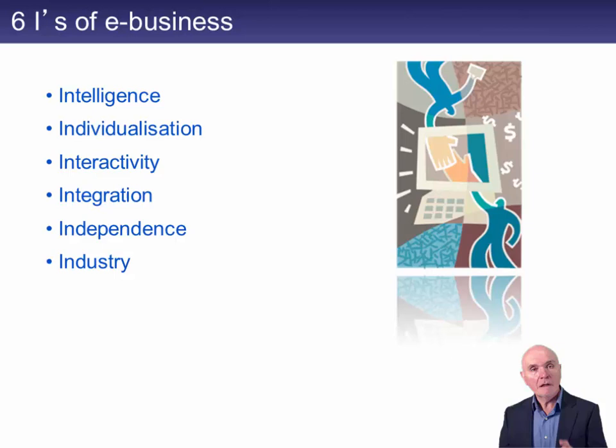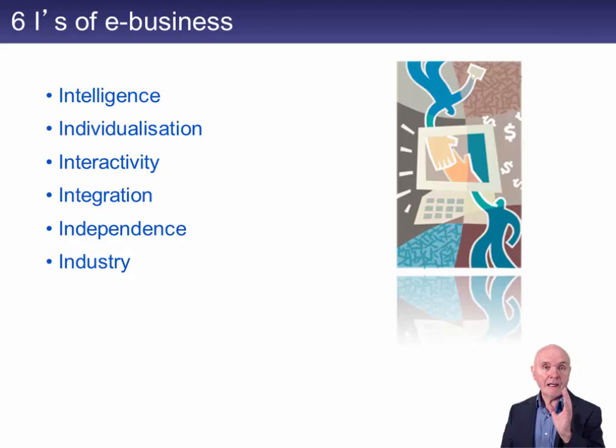First of all, there is Intelligence. Amazon knows every book I've bought, every piece of hardware I've bought. It also knows every book I may have looked at and not bought. So what it is doing is gaining fantastic information about my interests. We saw that I had bought one book by Charles Dickens — it knows I might be interested in Charles Dickens.